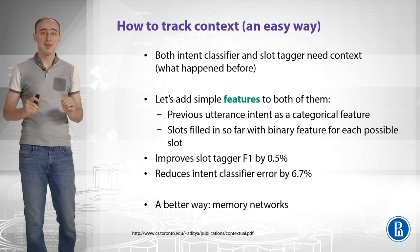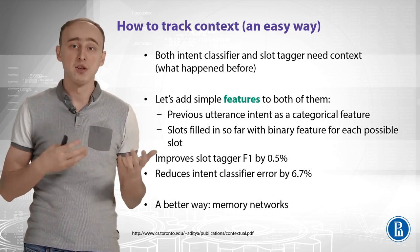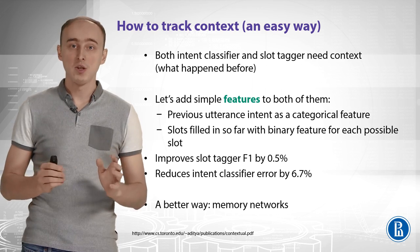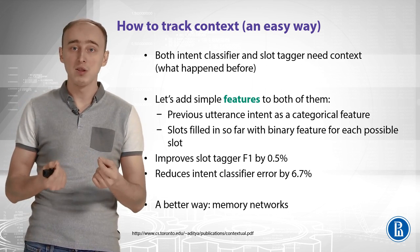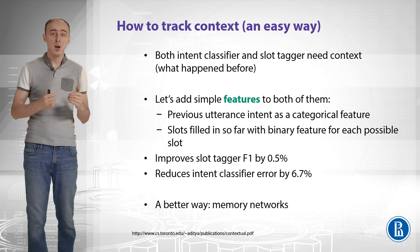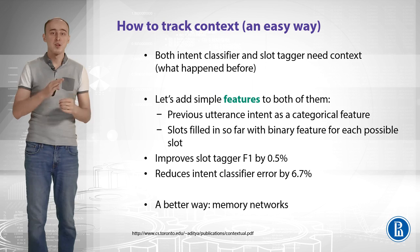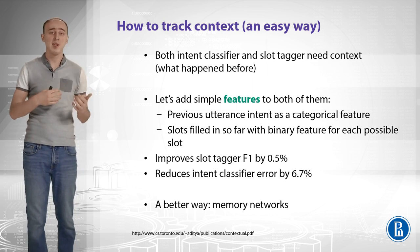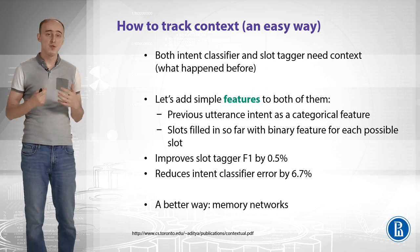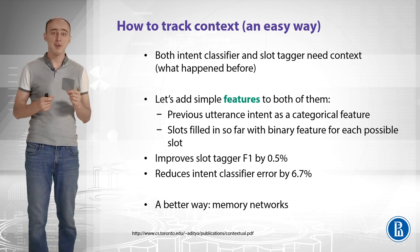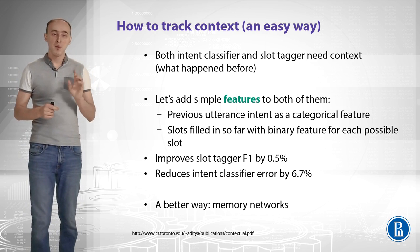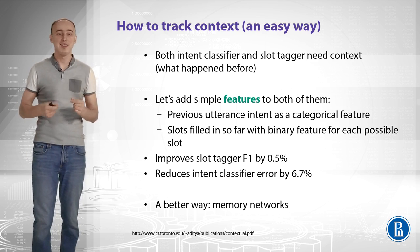Let's see how to track context in an easy way. We add simple features to both the intent classifier and slot tagger. The first feature is the previous utterance's intent as a categorical feature — knowing what the user wanted in the previous turn helps decide the current intent. We also add the slots filled so far as binary features for each possible slot, so the system knows which slots have already been provided. This simple procedure improves slot tagger F1 by 0.5% and reduces intent classifier error by 6.7%. We will review a better approach — memory networks — later.